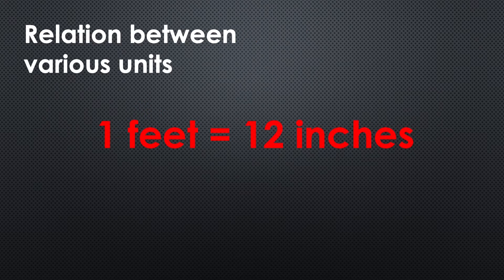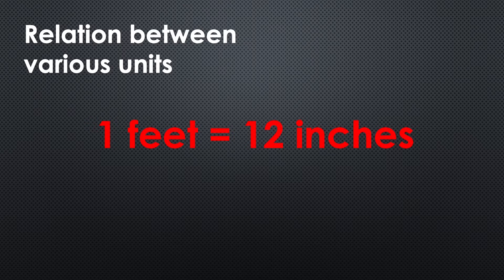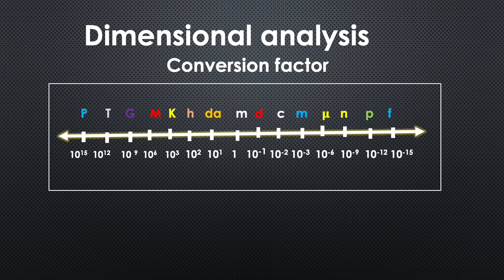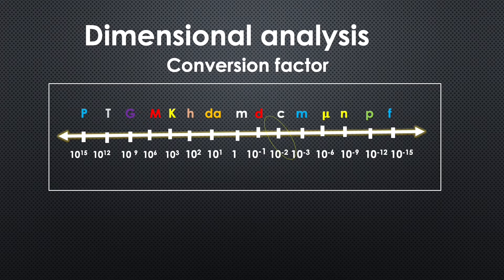First, let us analyze the relation between various units. 1 foot is equal to 12 inches and 1 inch is equal to 2.54 cm. So 1 cm is equal to 10 raise to minus 2 meter.